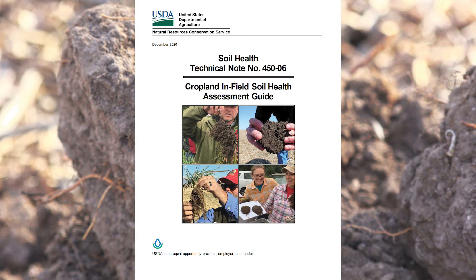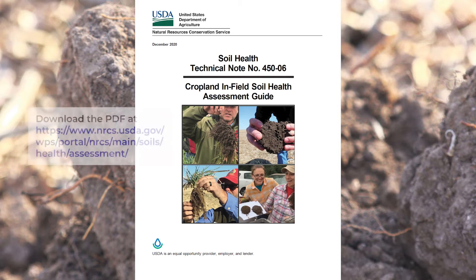As the guide states, in general it will not be necessary to evaluate all 11 indicators, but only those that are needed to adequately assess a field's soil health status at the time. Some indicators will be more interpretable and representative of soil health than others, depending on site conditions, soil type, landscape position, climate, time of year, and production system.